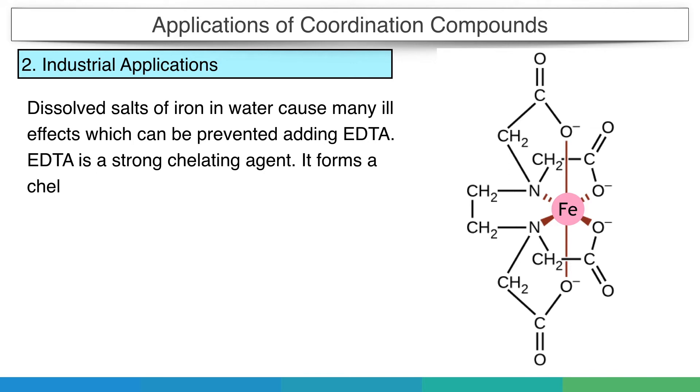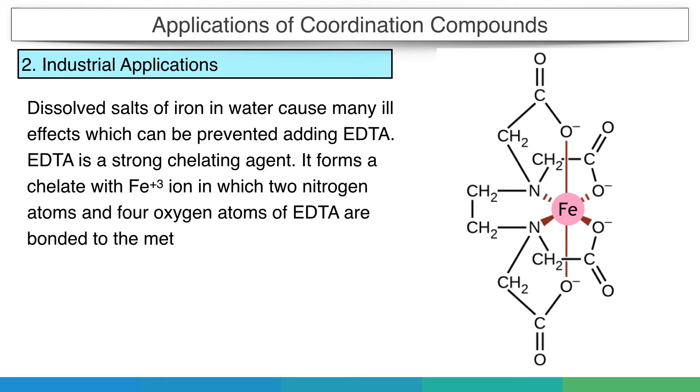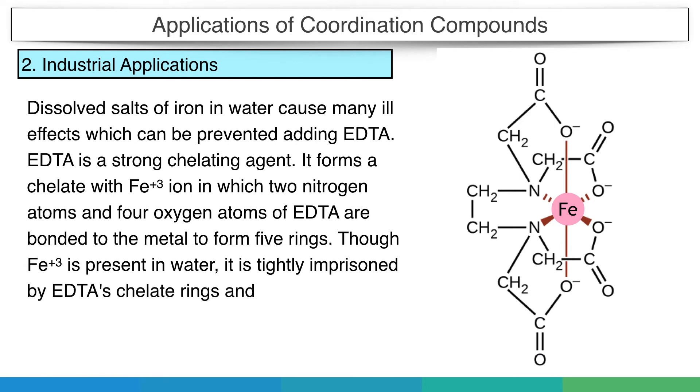It forms a chelate with iron 3+ ions in which 2 nitrogen atoms and 4 oxygen atoms of EDTA are bonded to the metal to form 5 rings. Though iron 3+ ions are present in water, they are strongly imprisoned by EDTA's chelating rings and hence are harmless.